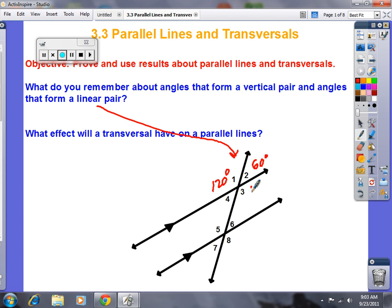3 is 120. Juliana, for two reasons. It's either a vertical pair to number 1 or it's a linear pair to number 2. You see how 2 and 3 are on a straight line? That's 180. Or you could say, well, I know that 1 and 3 are vertical angles, so they're equal. What's 4?